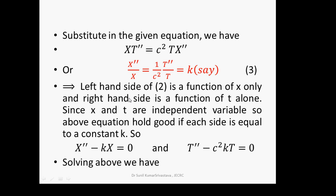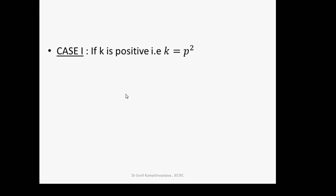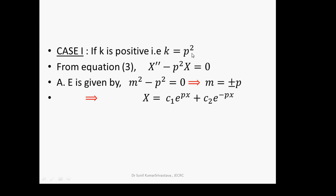We consider three cases. Case 1: k is positive. Let k = p². Then from equation 3, X'' − p²X = 0. This is a linear ODE with constant coefficients; the auxiliary equation gives m² − p² = 0, so m = ±p. The complementary function for X is: X = c₁e^(px) + c₂e^(−px).